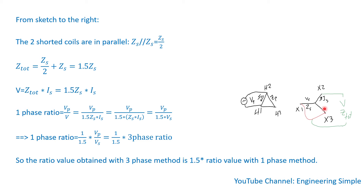In summary: if you cannot access the neutral of the Y winding, you can measure the voltage ratio using the single-phase method. Apply voltage to one winding on the delta side and one winding on the Y side, with the untested windings' terminals shorted. To get the equivalent three-phase voltage ratio, simply take 1.5 times whatever voltage ratio value you obtained from the single-phase measurement.